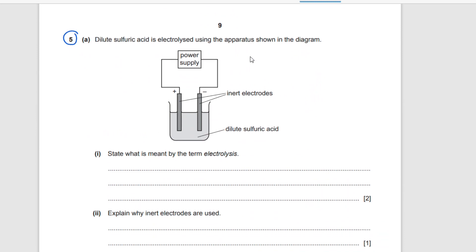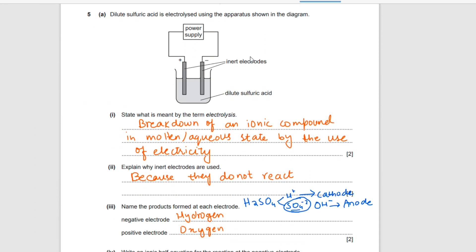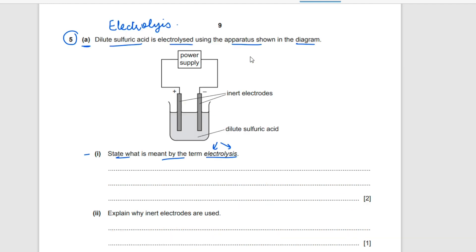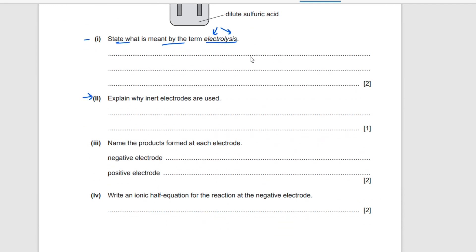Question number five is taken from the topic of electrolysis, in chapter four of the book. Dilute sulfuric acid is electrolyzed using the apparatus shown in the diagram. Question one: state what is meant by the term electrolysis. 'Electro' means electricity and 'lysis' means breakdown — so it is the breakdown of an ionic compound in molten or aqueous state by the use of electricity.